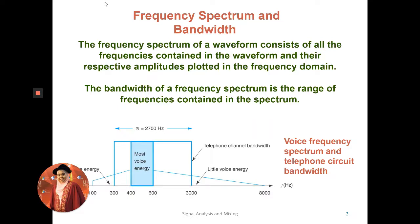The bandwidth is the range of frequencies contained in the spectrum. We calculate it by taking the highest frequency in the signal minus the lowest frequency. So bandwidth is the difference between the highest and the lowest frequency in the signal.